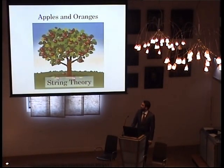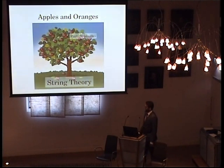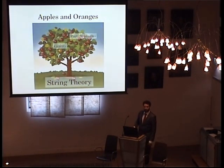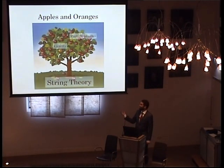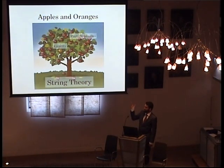And then here comes string theory. String theory we represent as a tree. All of the theory of the very small are all these apples — that's what we call the standard model or particle physics type models. And then we have the theory of the very large object, which is gravity, and it's sitting in the same tree. So in a way, string theory is sort of an overarching framework in which you describe all of the fundamental forces that we know are present in nature. You've never seen a tree that actually has both apples and oranges. But it's even stranger to find a theory that actually does both gravity and quantum mechanics, the theory of very small things.